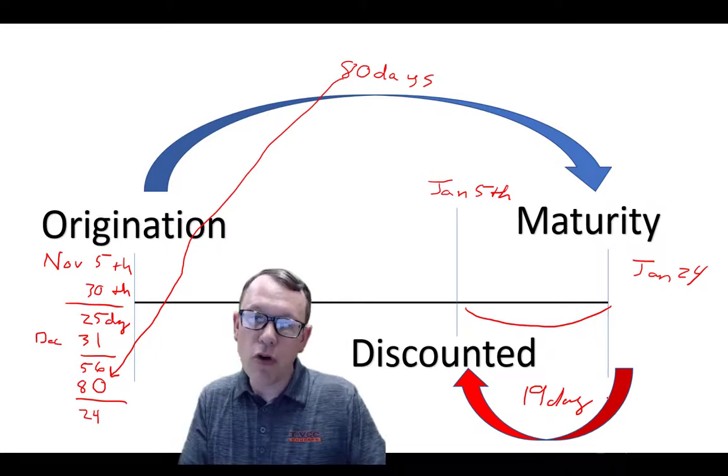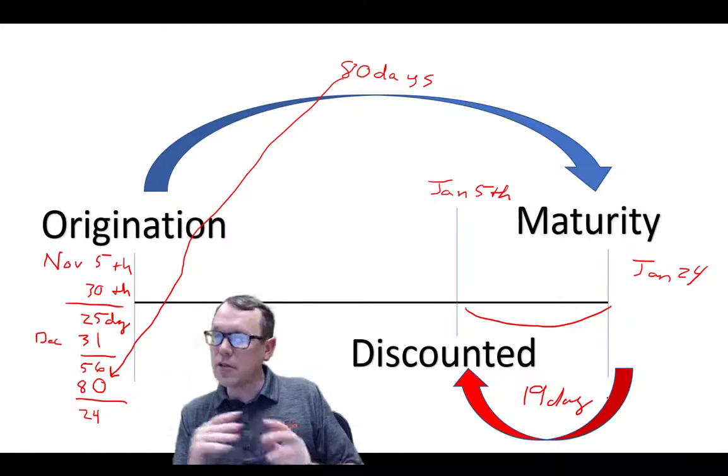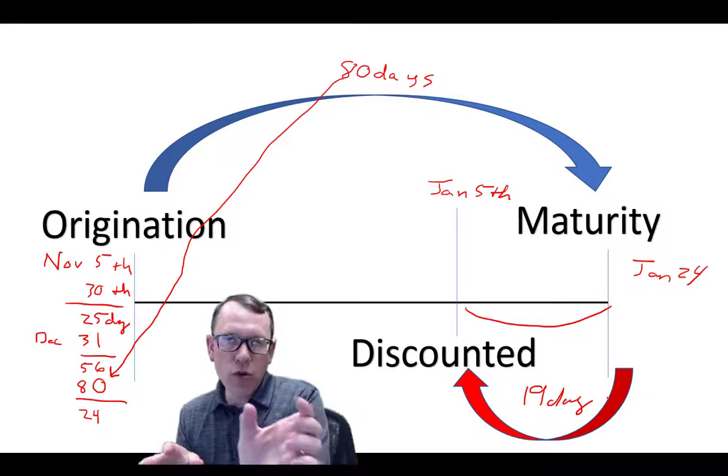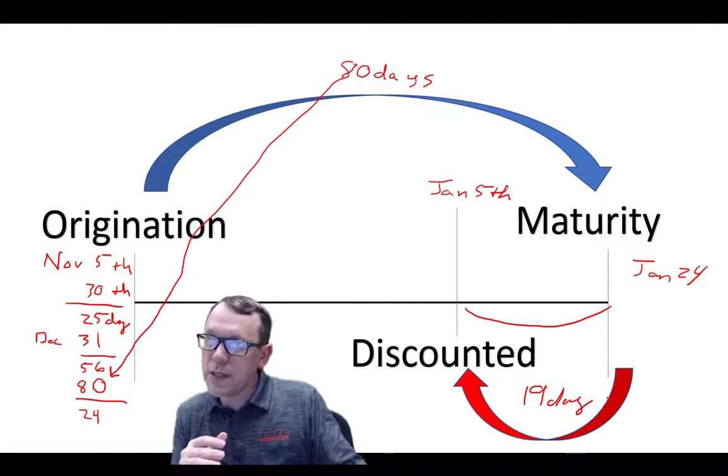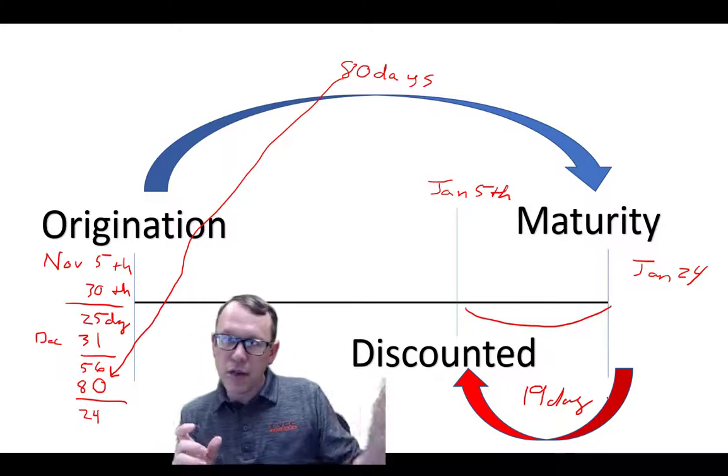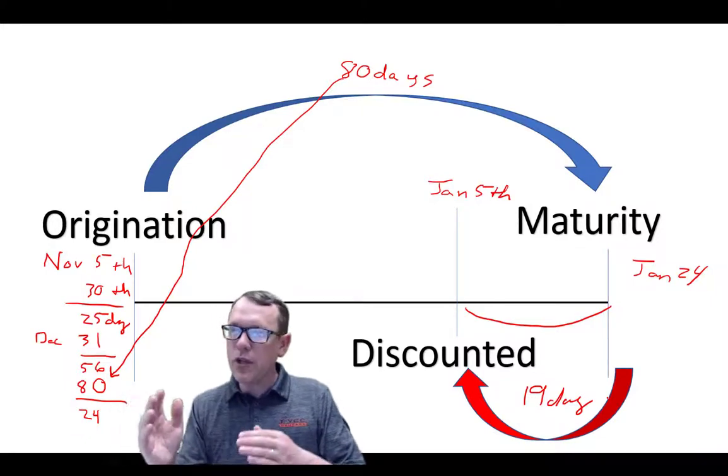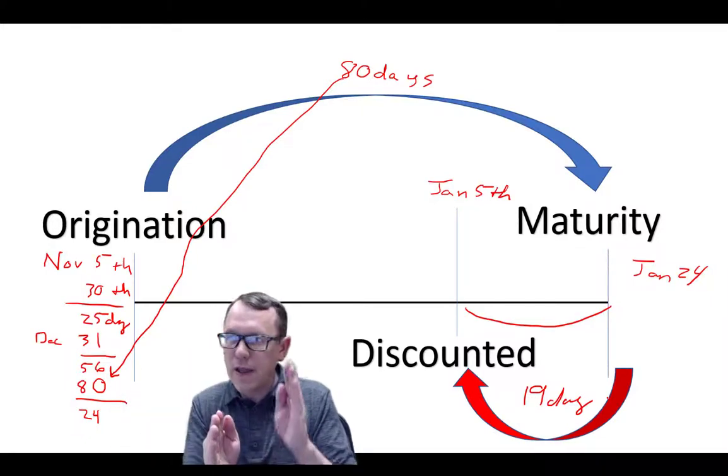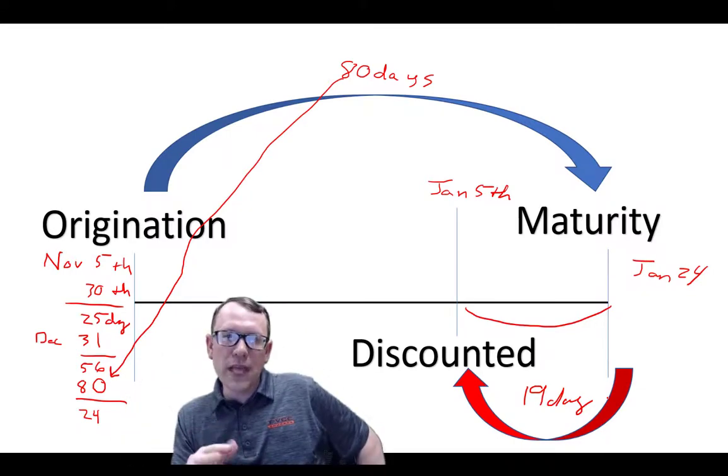It's really important as we go through problems like this, I really like to draw out timelines. Timelines can really help us understand which part we're trying to find and which parts we already know. If we already know it's 80 days, we know the days from origination to the origination date and the discount date, then we know we need to solve for the maturity date and we need to solve for that discount period between the discounted date and the maturity date. It lets us know what pieces are blank and what we can solve for.